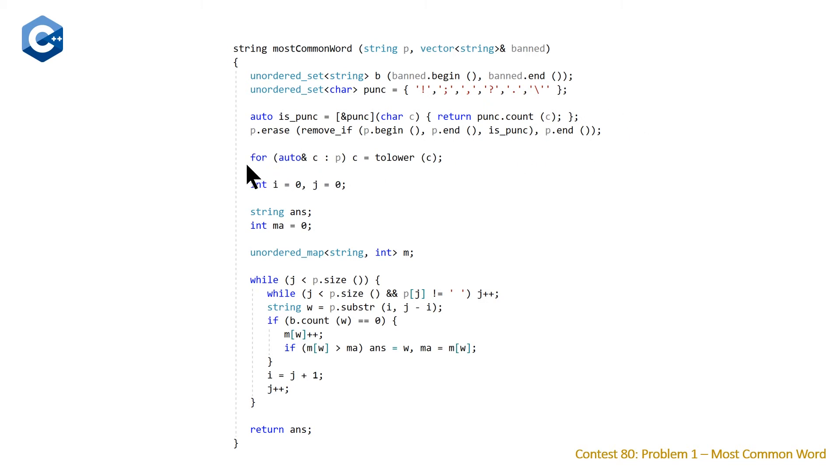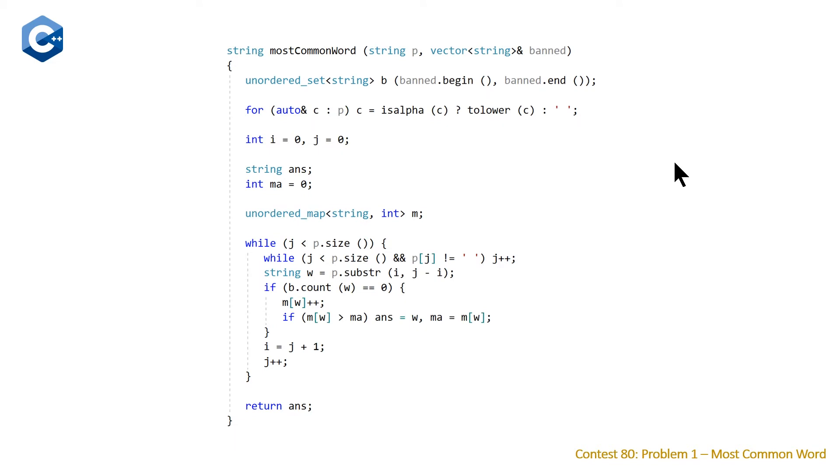And after we've done this, then we are just going to loop through and convert any of our uppercase characters to lowercase. So, this works, and it uses the erase remove idiom, and also the lambda, which is nice. But when I was reviewing other people's code, there was a much, much cleaner way to do this.